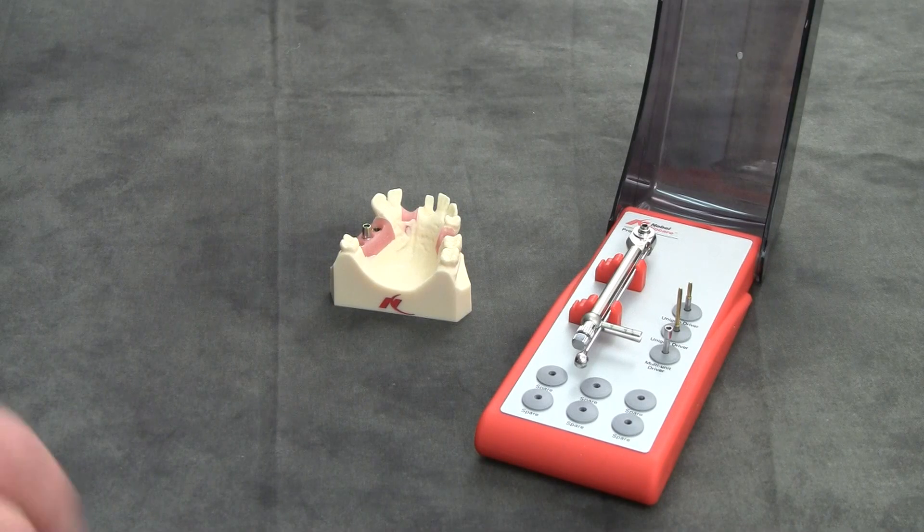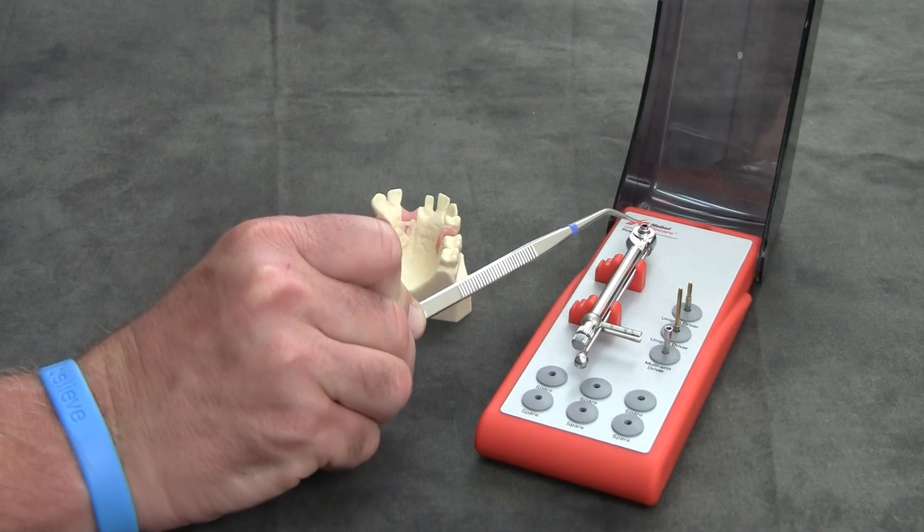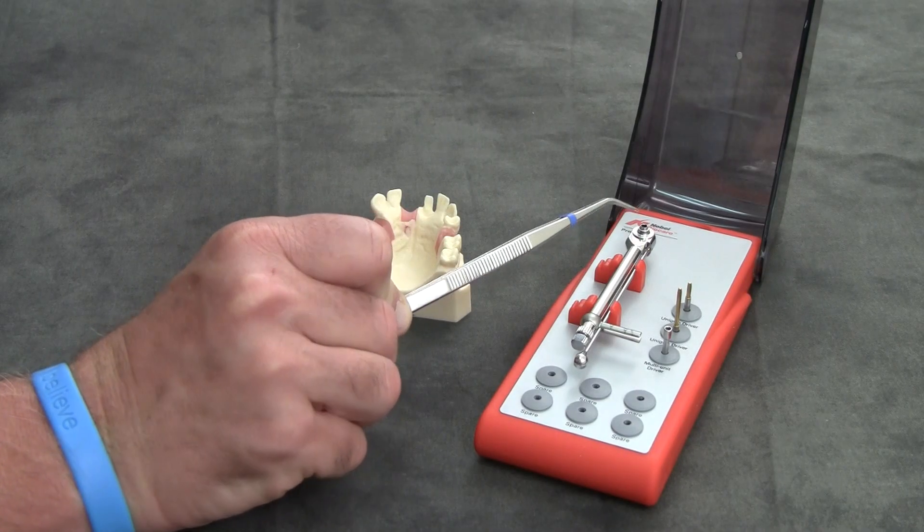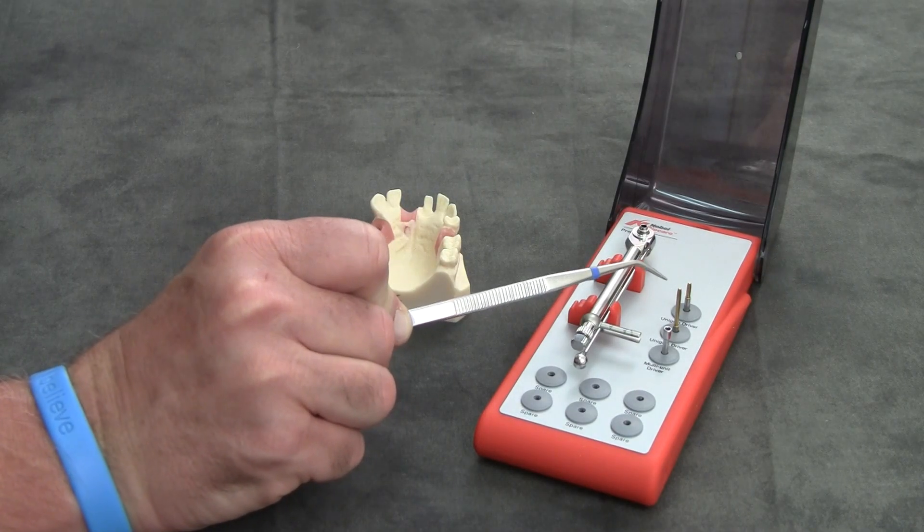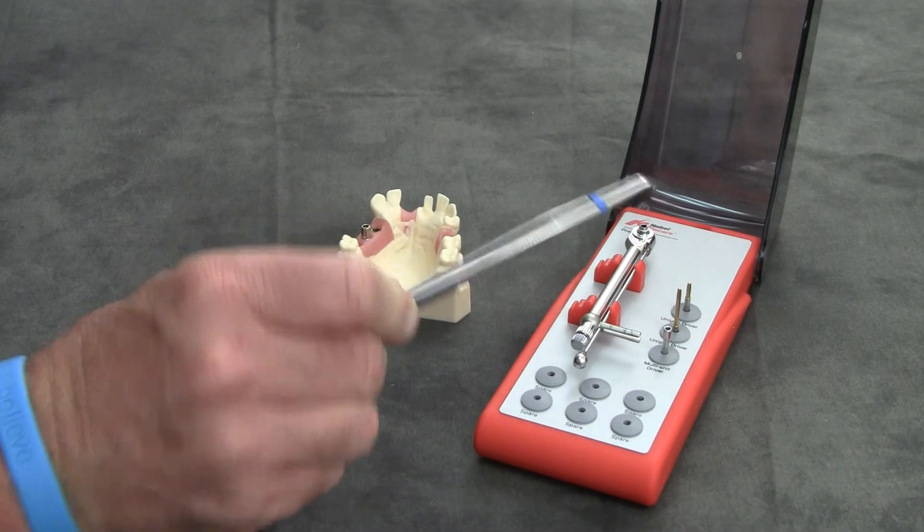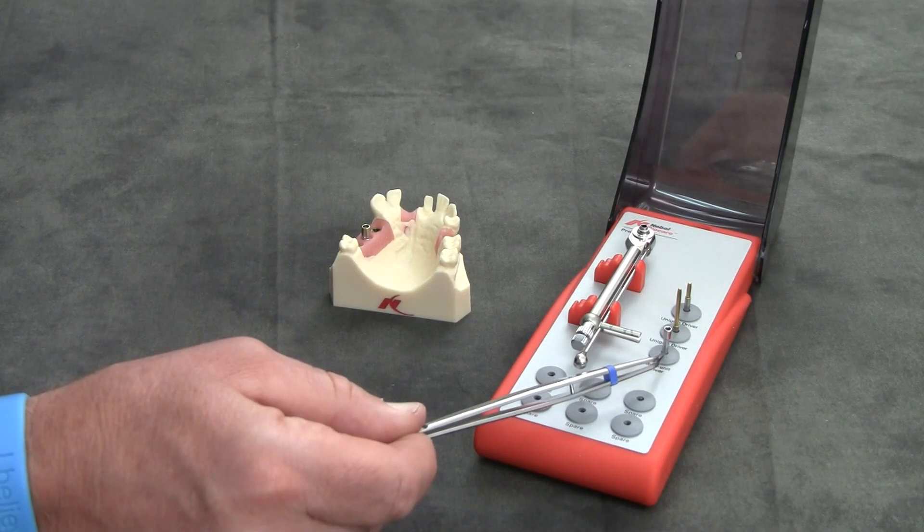In the kit box, you'll find the torque wrench with the hand adapter inside, the long and short uni-grip driver inserts, and here the multi-unit driver insert.